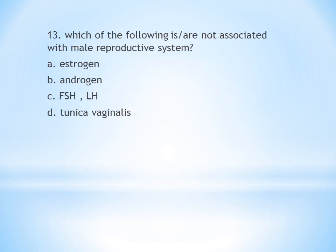Thirteenth question: Which of the following is not associated with the male reproductive system? A. Estrogen, B. Androgen, C. FSH and LH, D. Tunica vaginalis. Estrogen is a female hormone, so it is not associated with the male reproductive system. Answer is A.